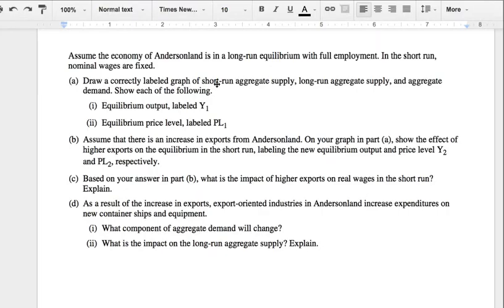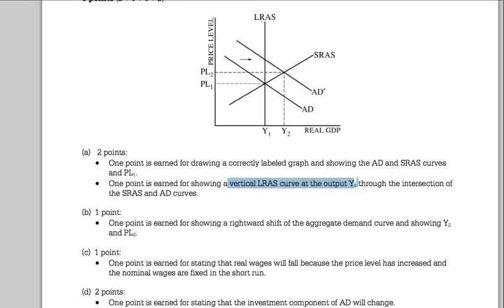Going to the next part of the question, assuming that there is an increase in exports from Anderson land. On your graph from part A, show the effect of the higher exports on equilibrium in the short run, labeling the new equilibrium output and price level Y2 and PL2 respectively. Increase in exports, C plus IG plus G plus XN. XN is right here. It's an increase. Therefore, we're going to be shifting that aggregate demand line to the right. You've got your new quantity, you've got your new price level. One point is earned for showing that rightward shift in aggregate demand.